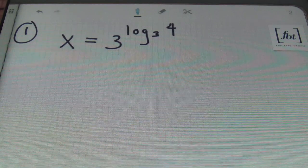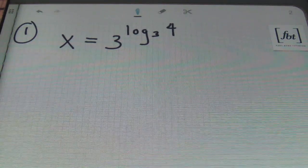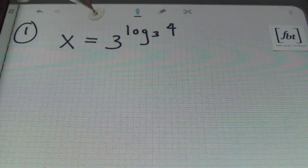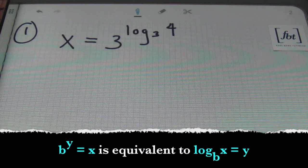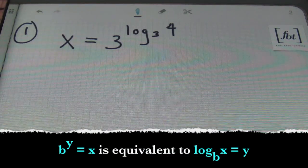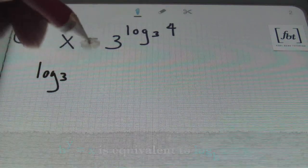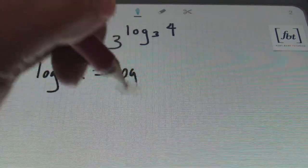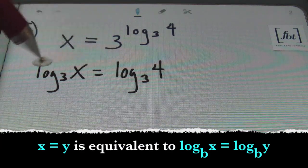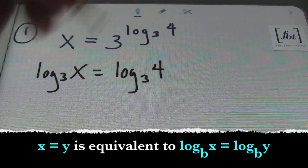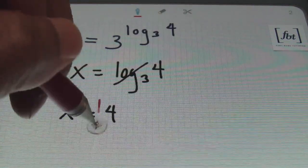For the first four problems I'm going to show you two different ways to go about solving these logarithmic equations, and then after that I'll just solve them by the method that calls out to me the most. In problem number one we have x equals 3 raised to the log base 3 of 4. I'm going to convert this into logarithmic form — it's currently in exponential form — so in logarithmic form it would be log base 3 of x equals log base 3 of 4. Anytime the same logarithm appears on either side of the equal sign you can cancel that out, leaving us with x equals 4.